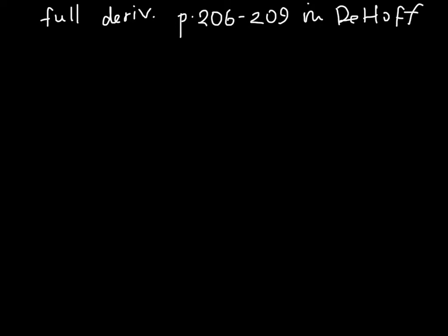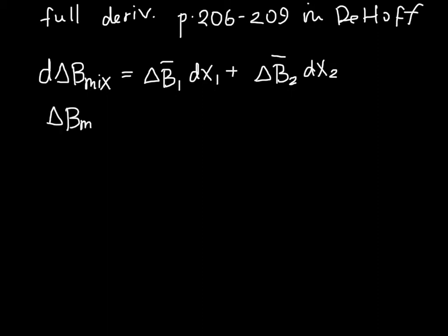But we start with the fact that we know how changes in B mixing are related to the partial molar properties, and these equations essentially come from the table that we had about how mixing properties can be found from partial molar properties. So we know this, we also know this about delta B mix. We don't need a D here, so this is just the weighted sum of these.